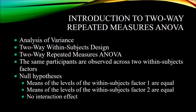The second null hypothesis is that the means of the levels of within-subjects factor 2 are equal. So let's say factor 1 is light and factor 2 is sound. You have a null hypothesis for the means of within-subjects factor light and within-subjects factor sound. Those are referred to as main effects — the effect of light and the effect of sound. The third null hypothesis is that there is no interaction effect — in this case, light times sound.